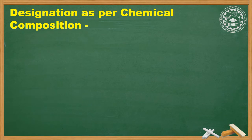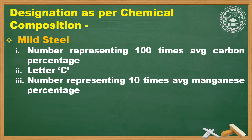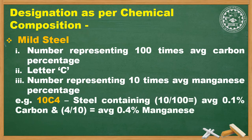Designation as per chemical composition: the first number represents 100 times the average carbon percentage, then there is a letter C, then a number which represents 10 times the average manganese percentage. For example, 10C4 is a steel which contains 10/100 = 0.1% carbon, and 4/10 = 0.4% manganese.